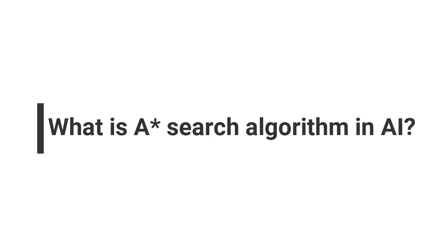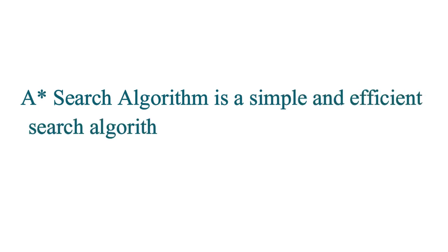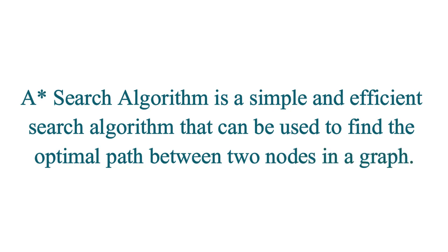What is the A* search algorithm in Artificial Intelligence? The A* search algorithm is a simple and efficient search algorithm that can be used to find the optimal path between two nodes in a graph.